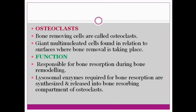The third type of cell is the osteoclast — these are your bone-removing cells. Multinucleated cells which are responsible for bone resorption during bone remodeling. The lysosomal enzymes required for bone resorption are synthesized and released into the bone-resorbing compartment from your osteoclasts.